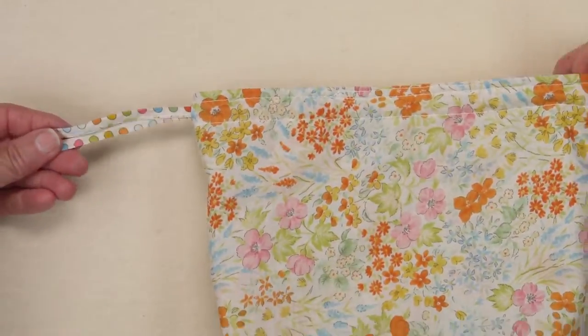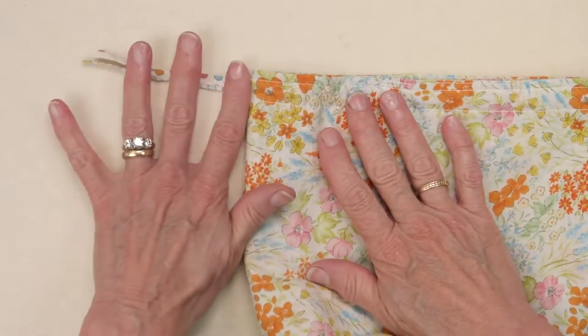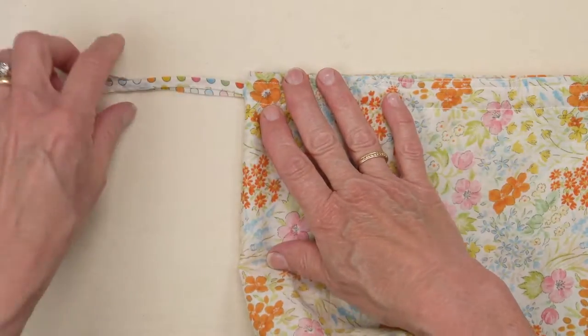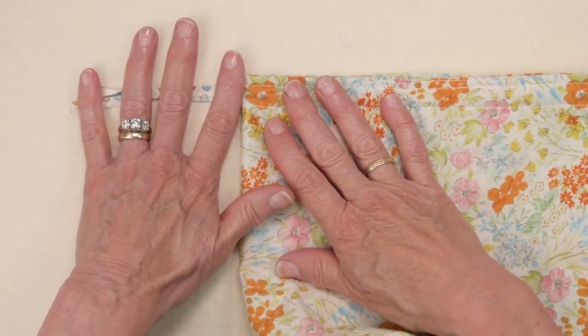Once your cord is all the way through the casing, go ahead and cut off the ends. And I cut mine about that long, about like that, hand width.